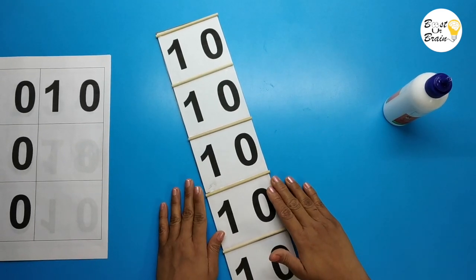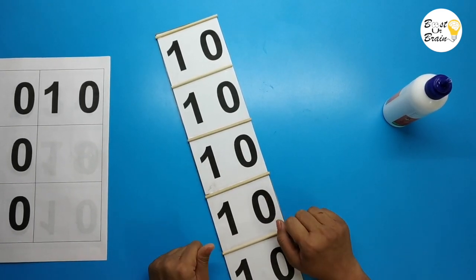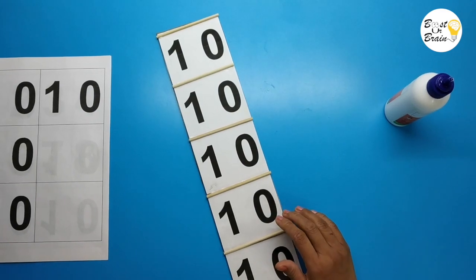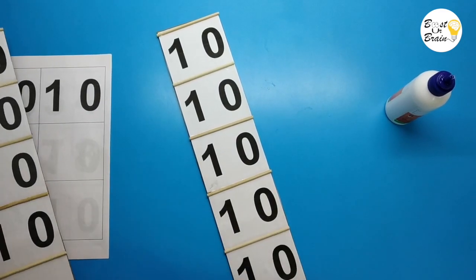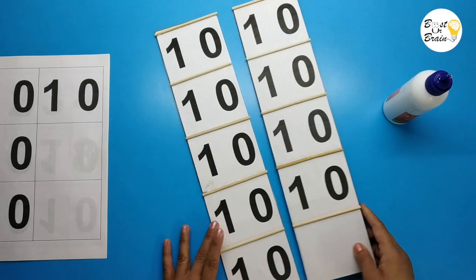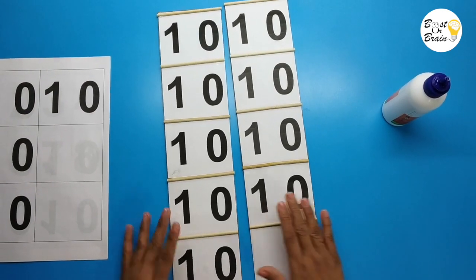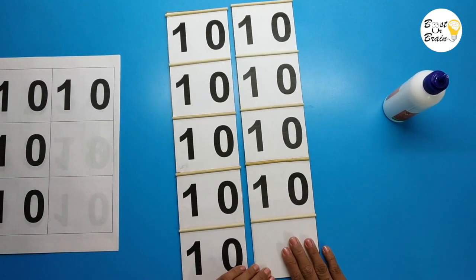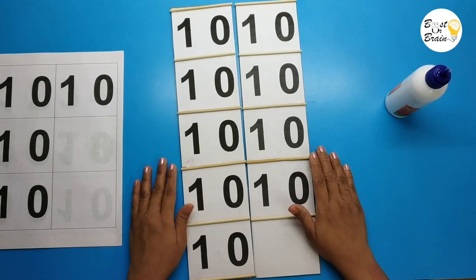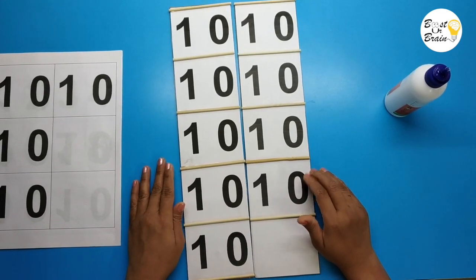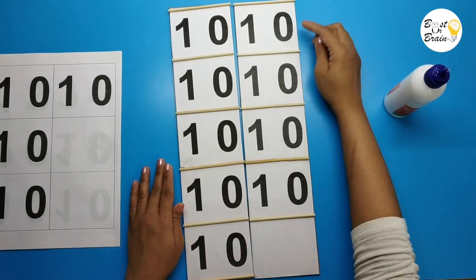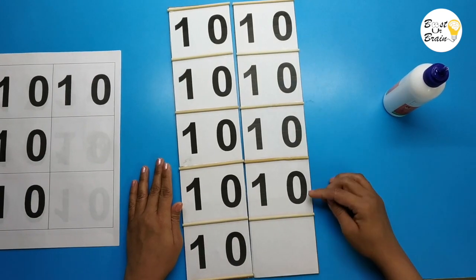Now our first teen board is ready. Make another board like this with the same method. But in the second teen board we need only 4 tens.